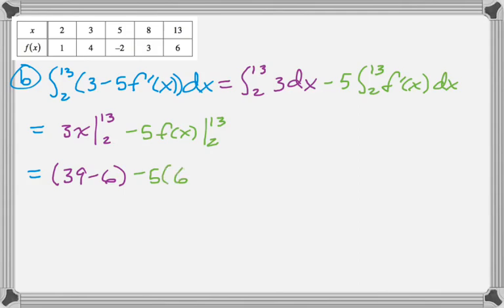and we'll do parentheses. f of 13 is 6, minus f of 2, which is given to be 1, and then we just clean this up to get 8. And so that's all the work I would show.